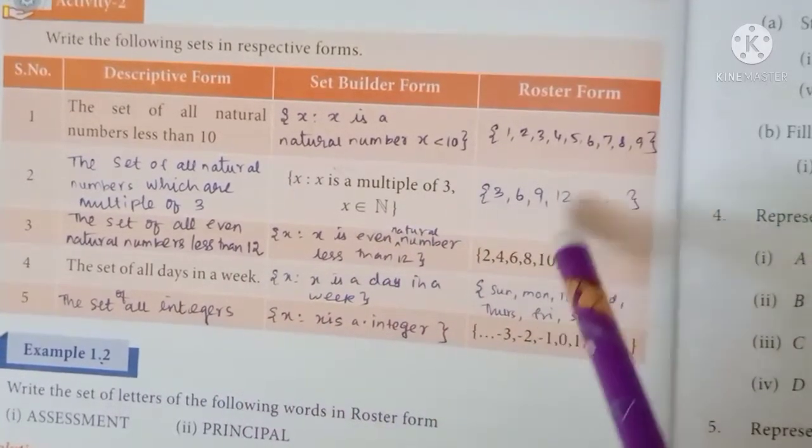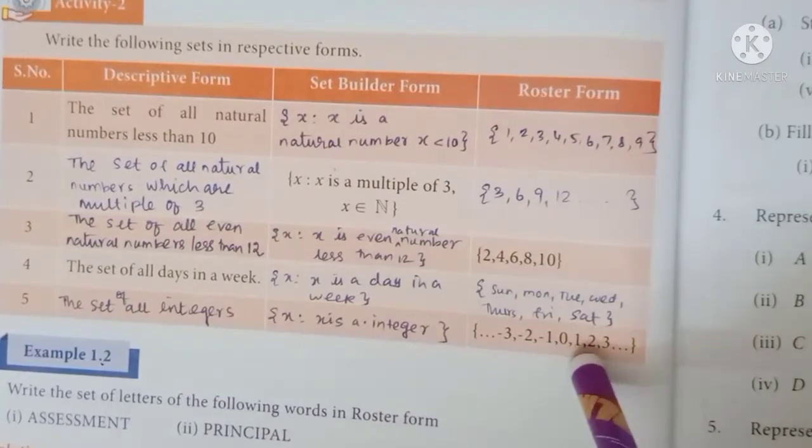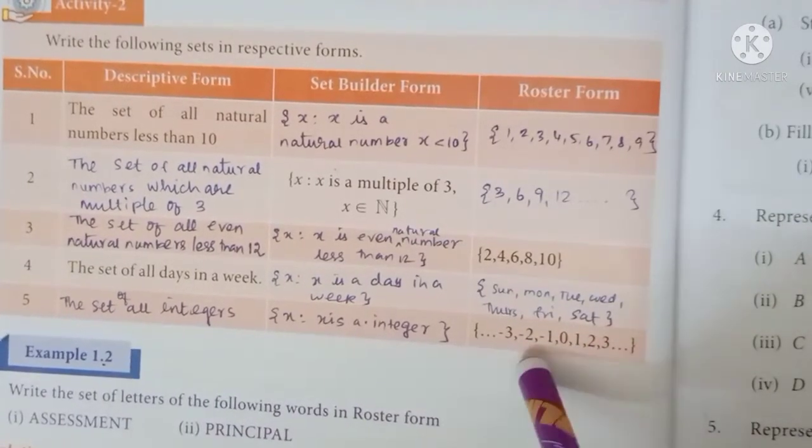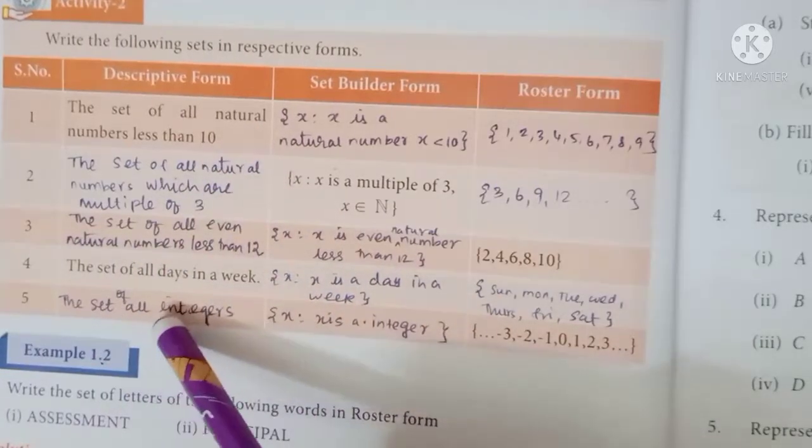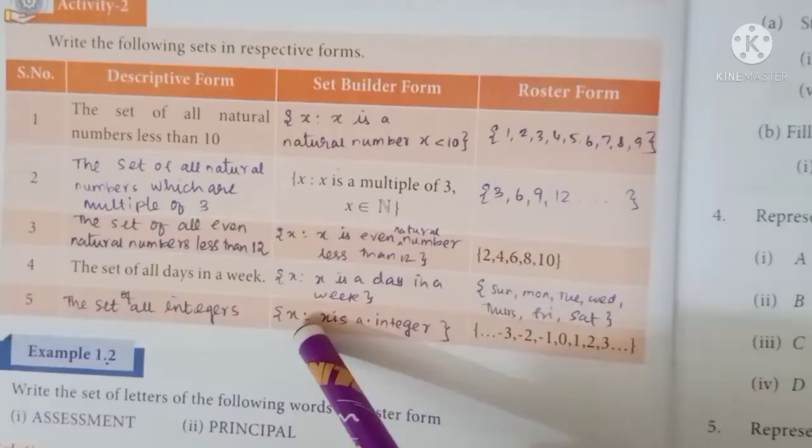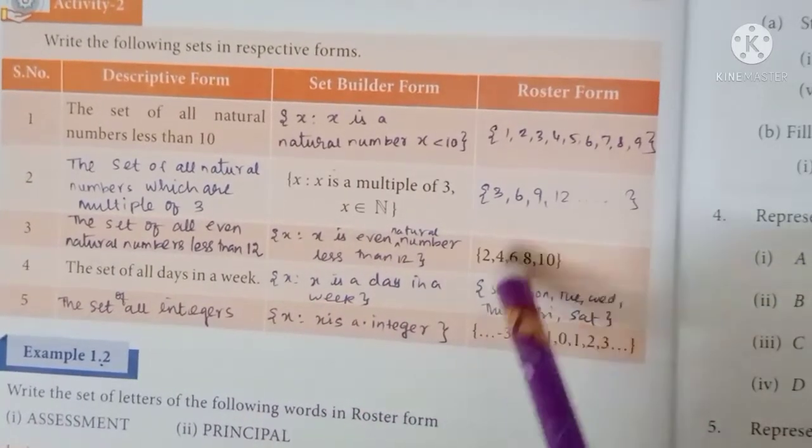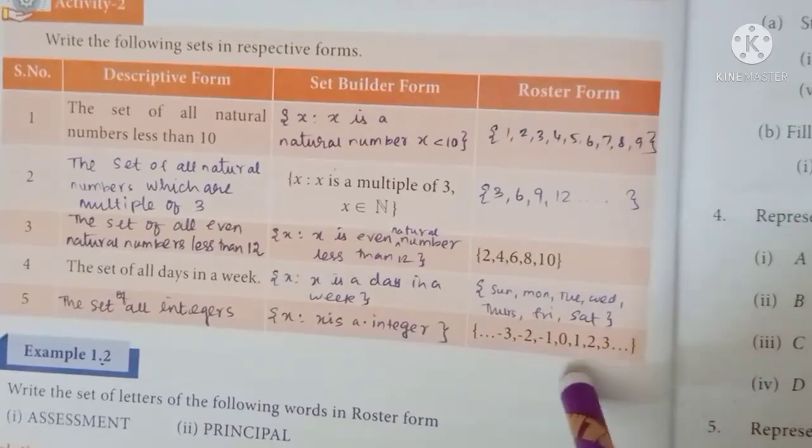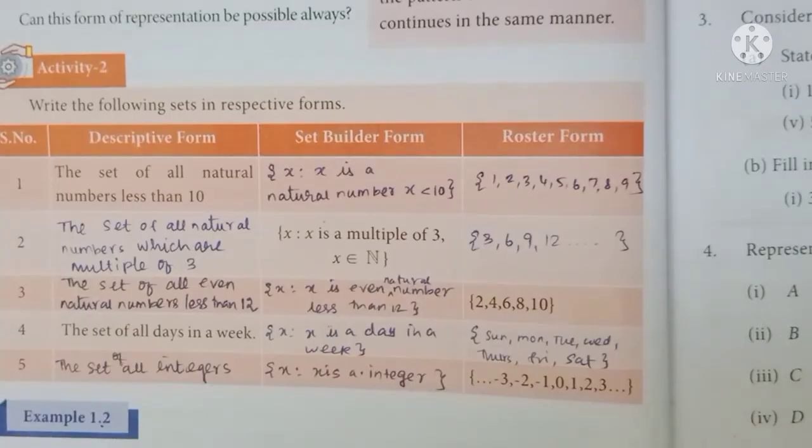In the last 5th question, we have the roster form. We have to give the set of all integers - positive integers, negative integers, and 0. Then the set of all integers is z. So this is the descriptive form: the set of all integers. In the set builder form: the set of all x such that x is an integer. So the roster form is 0, 1, 2, 3, minus 1, minus 2, minus 3, and so on.